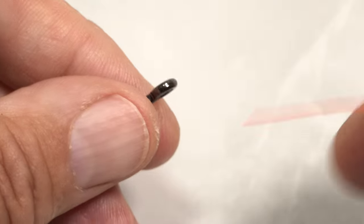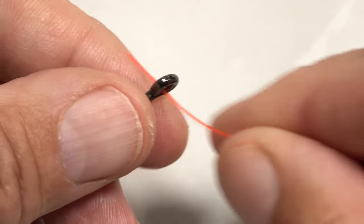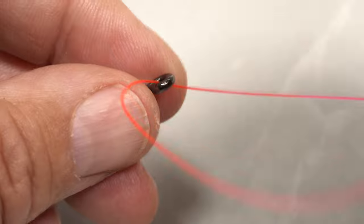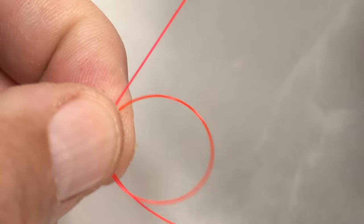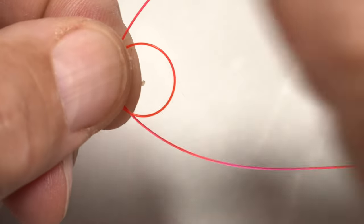A second variation, called the tri-lean knot, is often used with larger hooks and heavier lines. Rather than passing the tag end of the line through the hook eye once, bring it around and pass it through a second time to create a small loop.